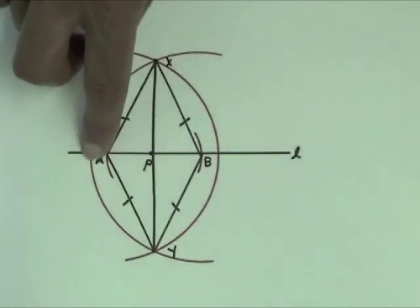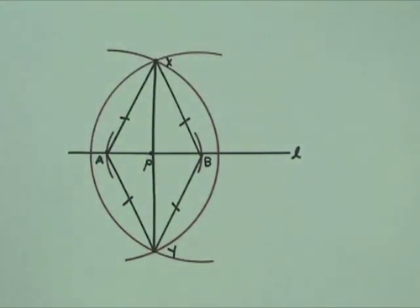AXBY is a quadrilateral with four equal sides. So AXBY is a rhombus.